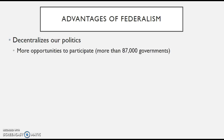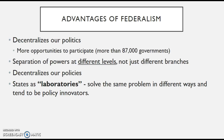There are quite a few advantages to federalism. It decentralizes our politics — there are more opportunities to participate. In all 50 states, a total of 87,000 different governments exist, including Boards of Education, town councils, mayors, and state governments. This gives ordinary people the opportunity to participate, allowing our politics to be decentralized and allowing ordinary people to participate in our democracy.